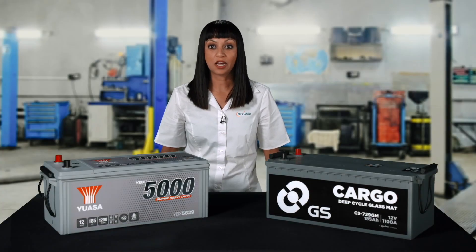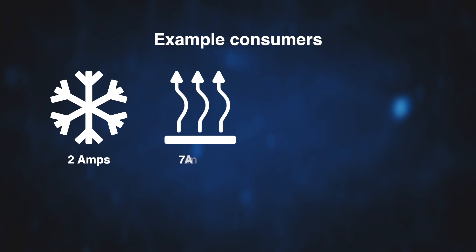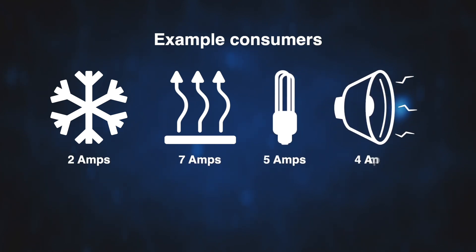Battery performance and service life is affected by the number of additional electrical consumers on the vehicle and their power requirements. Some of the most popular of which are a refrigerator at 2 amps, parking heater at 7 amps, interior lighting at 5 amps and entertainment systems at 4 amps.